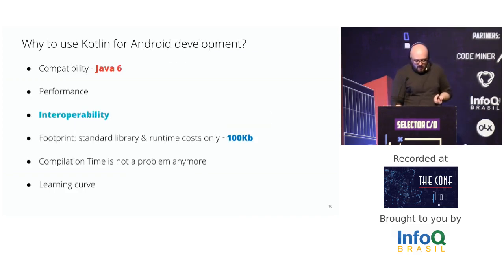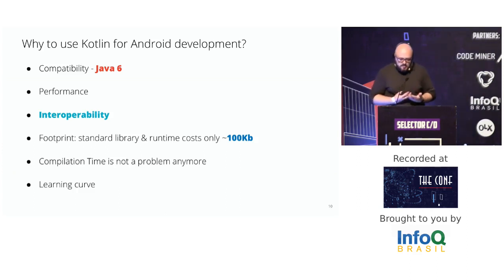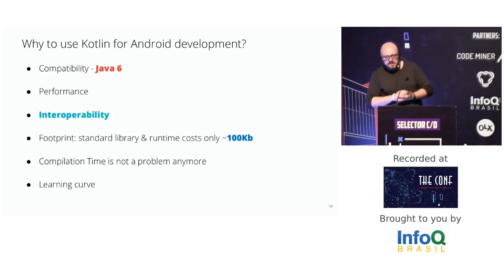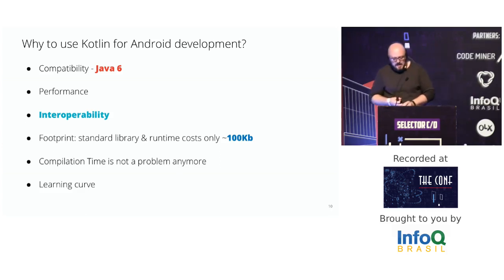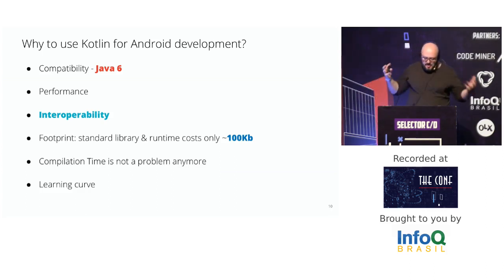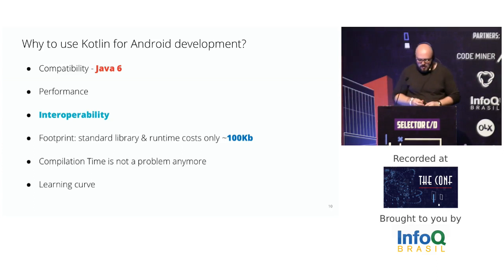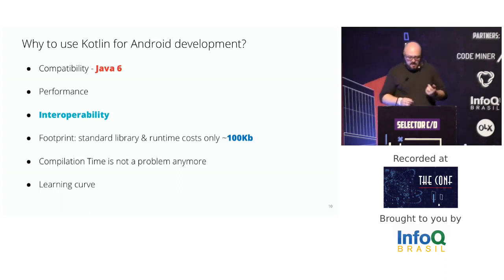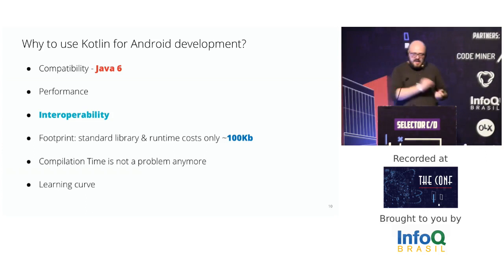Why use Kotlin for Android development? The first point is the capability to generate bytecode compatible with Java 6. Anyone who works with Android knows about the fragmentation of the platform, and despite Java 8 support on Android Nougat, we still need to support a range of versions, making it difficult to adopt new features. Kotlin's appeal was the ability to use modern language features in those environments.